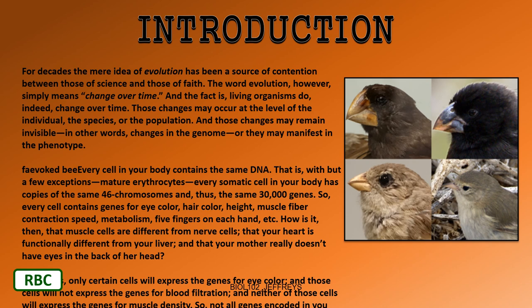Those changes can occur at the level of an individual, at the level of the species, or at the level of a population, and they can remain invisible. A change can evolve in the genome of an organism that never manifests itself, or it can manifest in the phenotype. This leads us into Chapter 18 on evolution and then Chapter 19 on evolution of individuals, species, and populations.